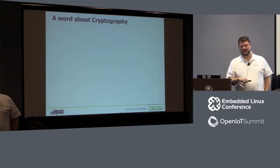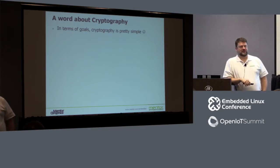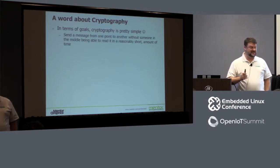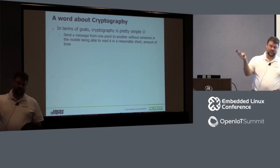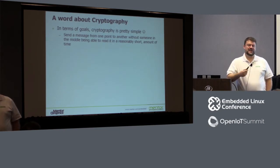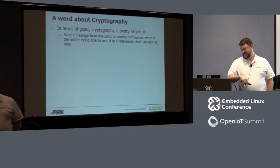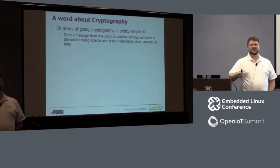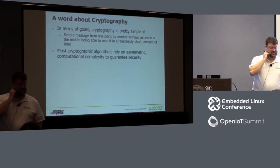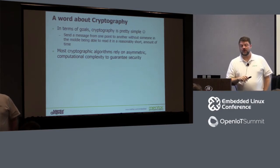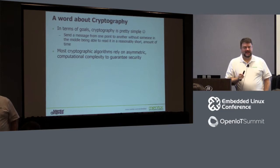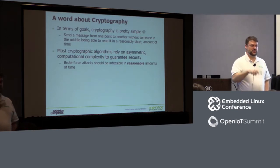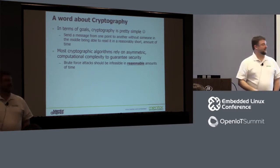I don't know how much experience there is with cryptography in general here, so I wanted to make sure we're clear on some basics. Cryptography is pretty simple, at least in principle. You're trying to take some piece of information — a message — and send it from one point to another, making sure that a person in the middle can't understand what that message is, or certainly can't understand it in a reasonable amount of time. Most cryptographic algorithms rely on an asymmetry in terms of computational complexity.